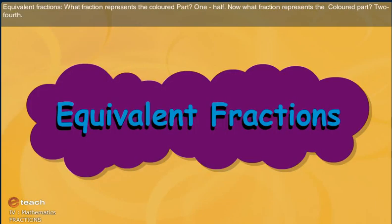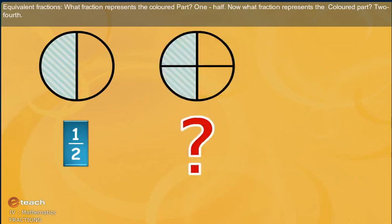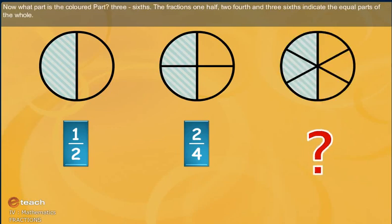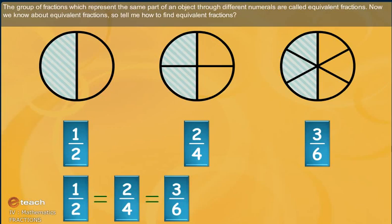Equivalent fractions. What fraction represents the colored part? One half. Now what fraction represents the colored part? Two fourth. Now what part is the colored part? Three sixth. The fractions one half, two fourth, and three sixth indicate equal parts of the whole.